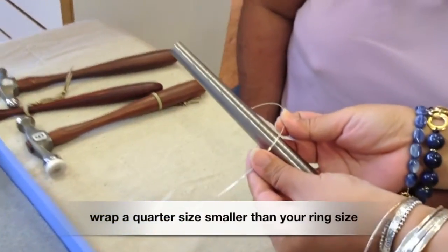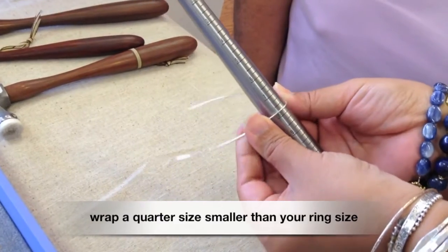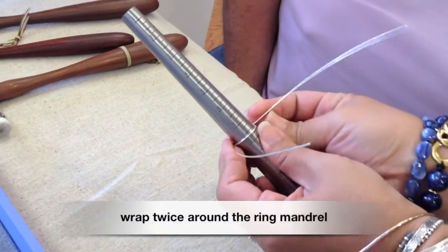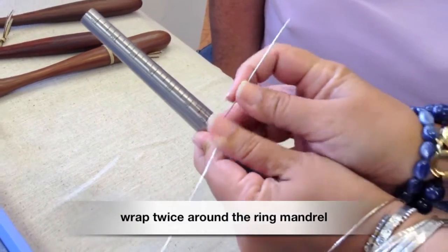We start the ring by wrapping a quarter size smaller than your ring size. For example, if you want a size 8 ring, we're going to wrap the wire twice around size 7 and 3 quarters.